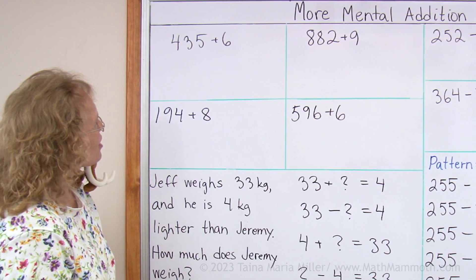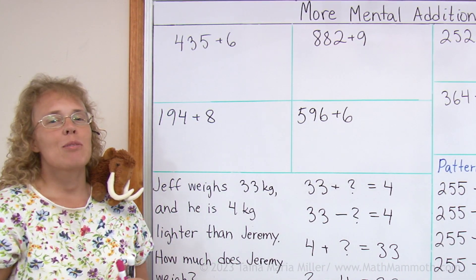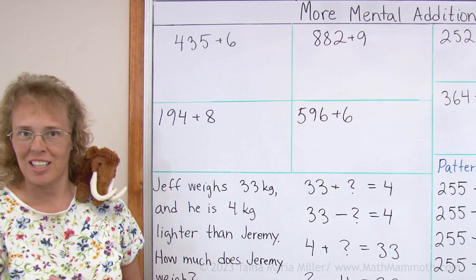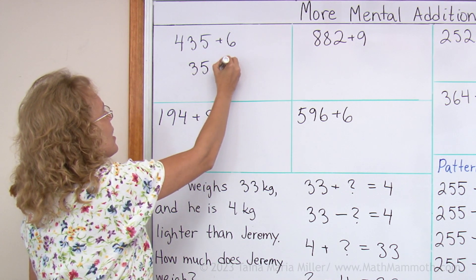My first example here is 435 plus 6. Basically what we will do is we will think of 35 plus 6. That's a helping problem, right? So you just solve 35 plus 6.